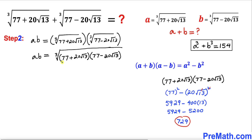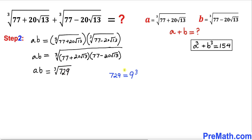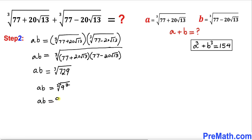If we simplify that expression we get 729. So we replace the whole part inside the radical by 729. Therefore a times b equals the cube root of 729, and we know that 729 is the same as 9 to the power of 3. So the cube root of 9 cubed — since the cube and cube root undo each other — our a times b value turns out to be simply 9.